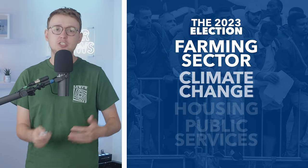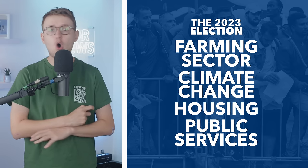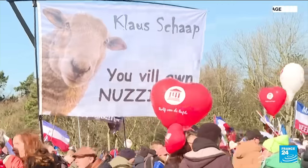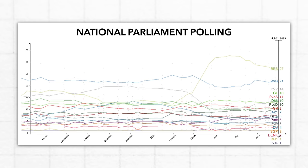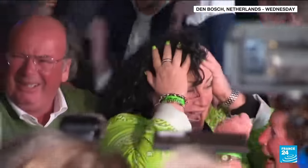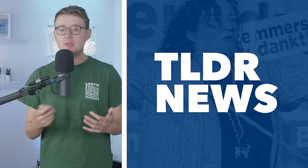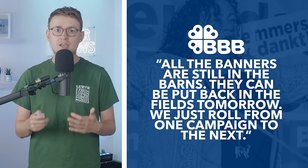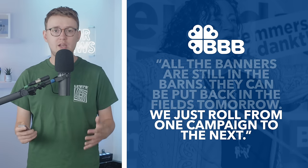Things like the agricultural sector, climate change, housing, public services, and more will be hotly debated in the run-up to the election. A lot of attention is also on the Farmer Citizen Movement, or BBB, a relatively new party that shot to prominence by supporting farmers' protests against government measures to cut livestock numbers and reduce agricultural pollution. They stunned the country in March 2023 by winning the provincial elections and are now polling ahead, though numbers have dipped from their peak earlier this year. The question is whether the party can replicate its provincial election success in a general election. The BBB's party leader says they're confident, saying that all the banners are still in the barns — they can be put back in the fields tomorrow, and they'll just roll from one campaign to the next.